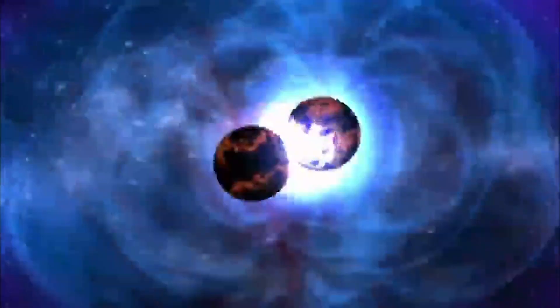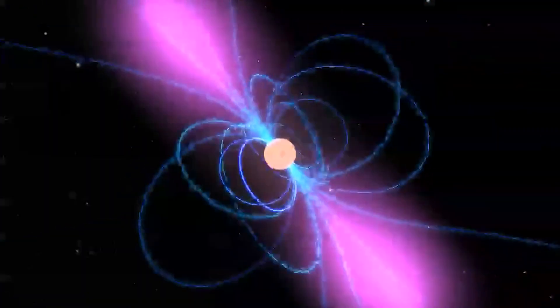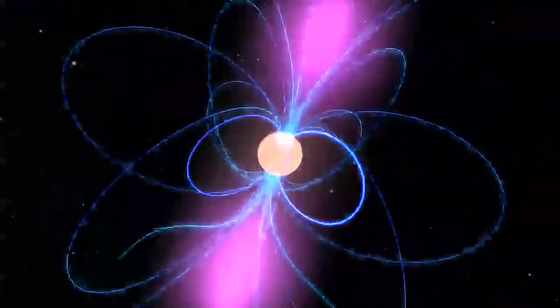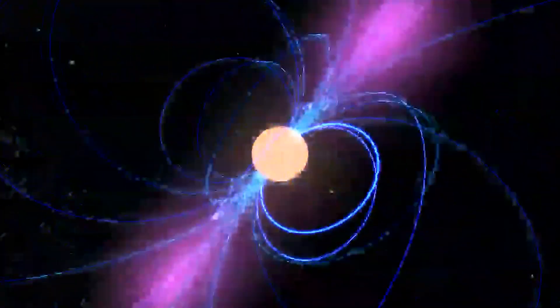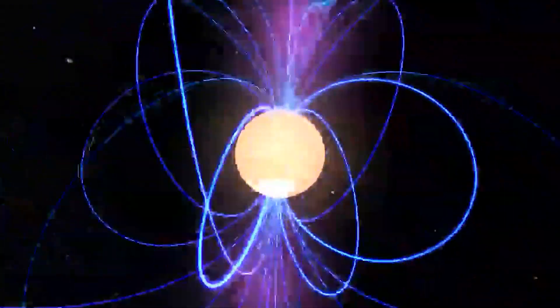Even today, scientists do not have a complete understanding of neutron stars because of how rare and peculiar they are. It is possible to make accurate estimates about what happens to all neutron matter around the surface of neutron stars based on observations of their interactions with their environments, but the exact composition of their cores remains unknown.